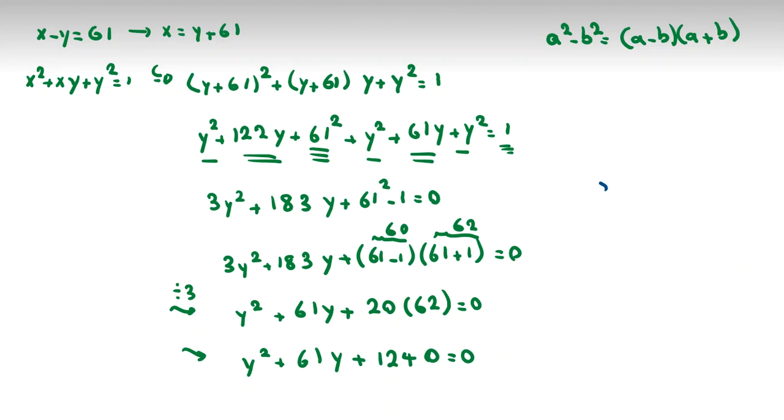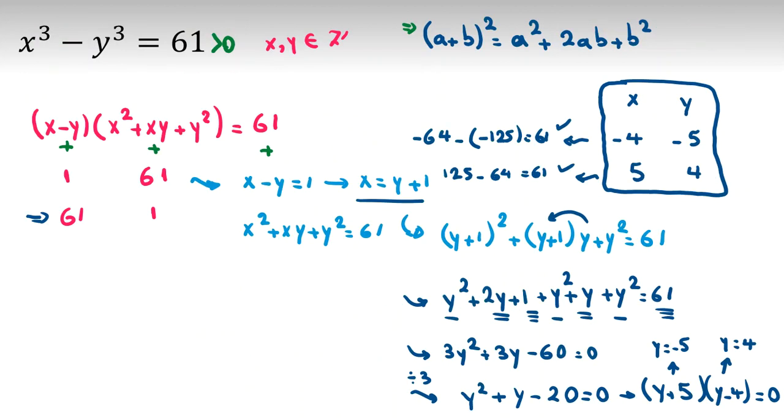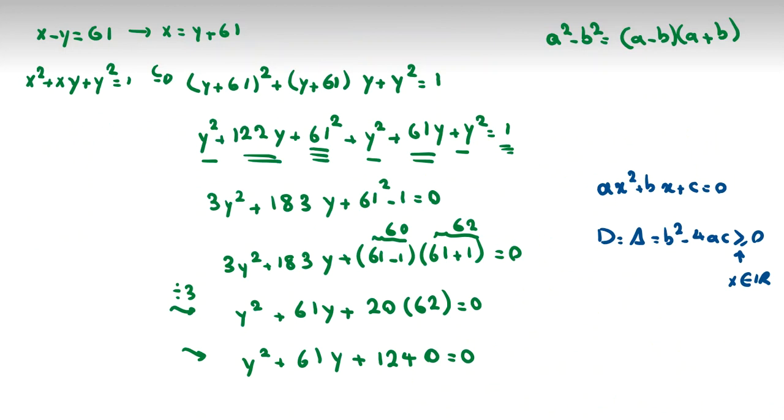Now I use the quadratic formula. If you have ax squared plus bx plus c equals 0, if you consider delta or discriminant, it is b squared minus 4ac. If x is real, it should be at least 0. Here in the problem, we said that x and y are integers, so obviously they are also real numbers. If I calculate the discriminant or delta here, it will be 61 squared minus 4 times 1240. 61 squared is 3721 minus 4960, which is obviously less than 0. So we don't have any real answer or integers here.